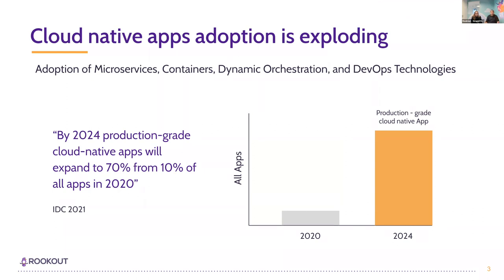Before we start the quest for real-time data, code-level data, and dynamic observability, I want to take a step back and see where we are today. Organizations are trying to reduce cost and optimize cost. They are looking for agility and elasticity, and this is why they're moving their applications and infrastructure to the cloud. Adoption of cloud-native technologies such as microservices, containers, dynamic orchestration, and DevOps are booming. We expect that by 2024, 70% of all applications are going to be cloud-native, compared to only 10% in 2020, according to IDC 2021.